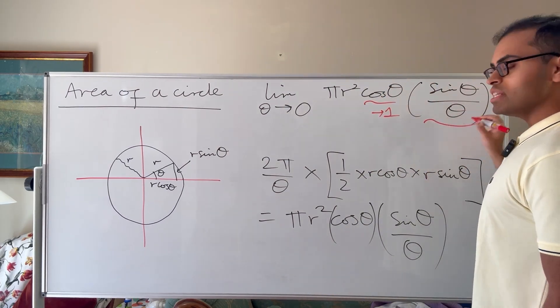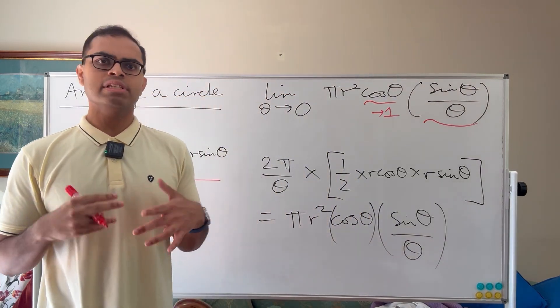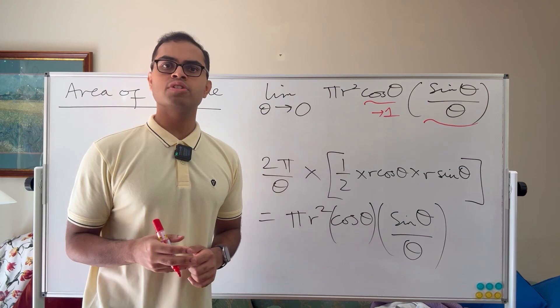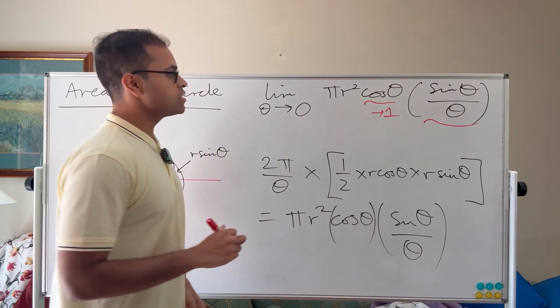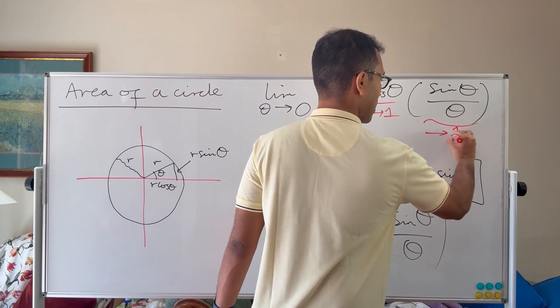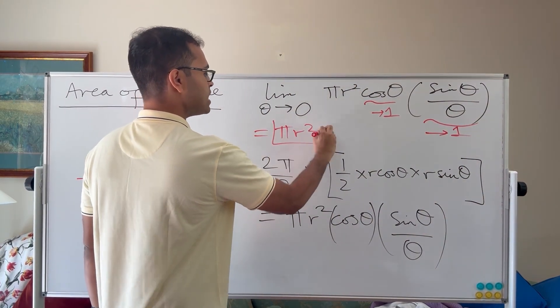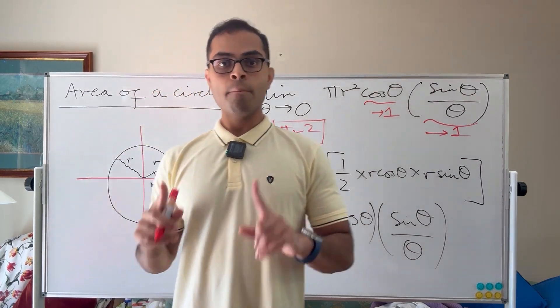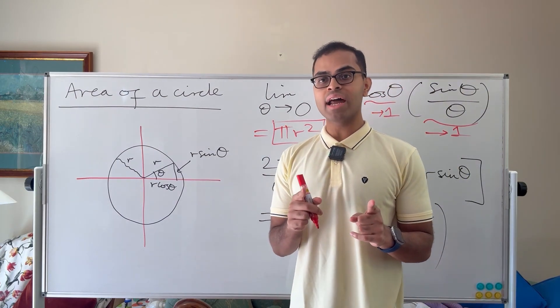And then what does this quantity approach, sin θ over θ? Now that is subtle. A lot of people think, well, sin θ is basically θ as θ approaches zero. So that also approaches one. It is correct. But the reasoning has to be super rigorous. Now, given that that approaches one, then you get that the limit is going to be π r squared. And that is going to be the area of the circle. So it's all done without integration. But we need to know why this limit of θ approaches zero of sin θ over θ is one.